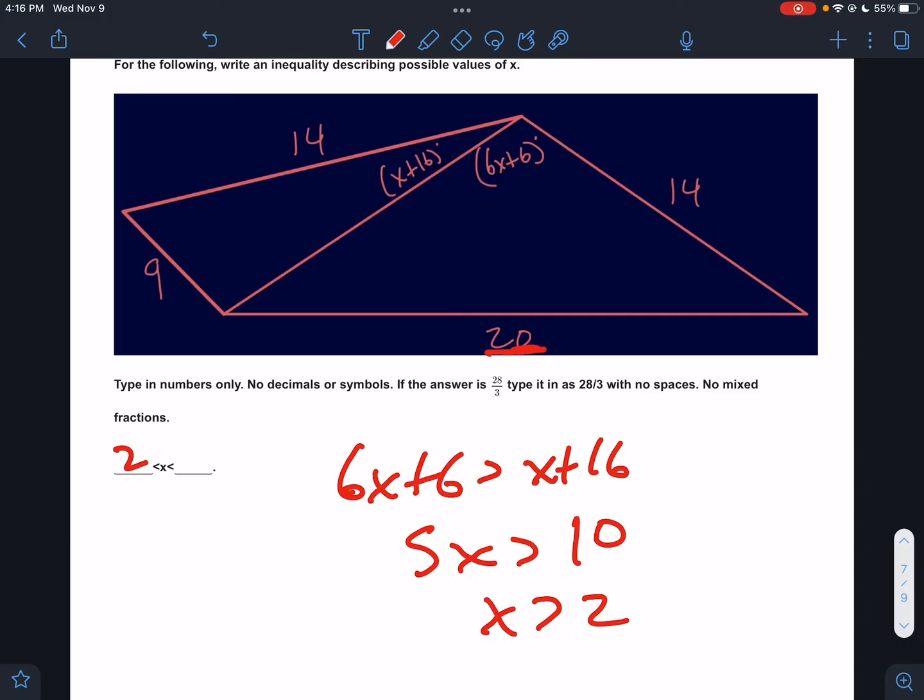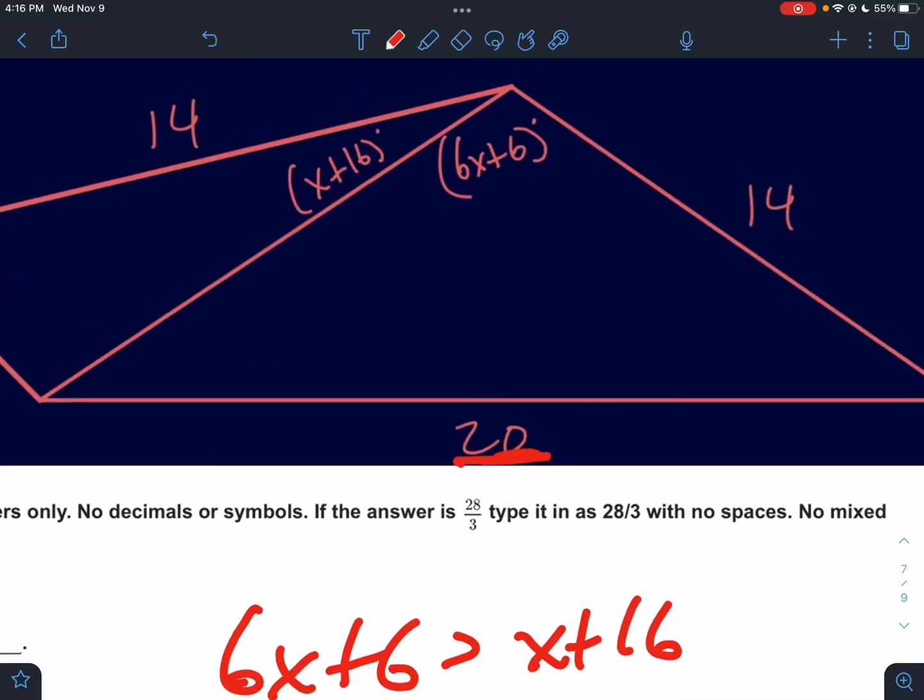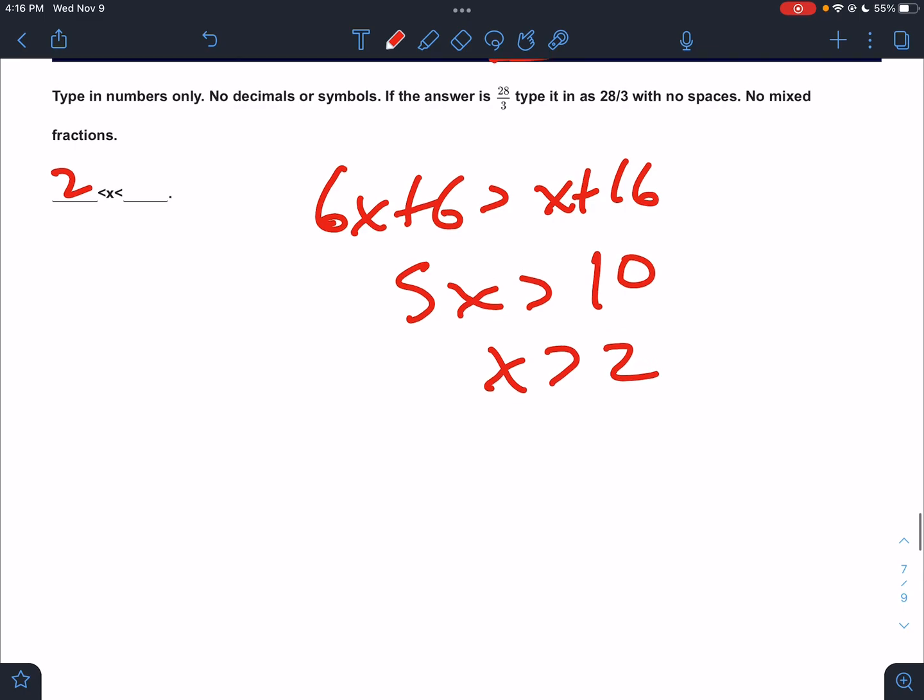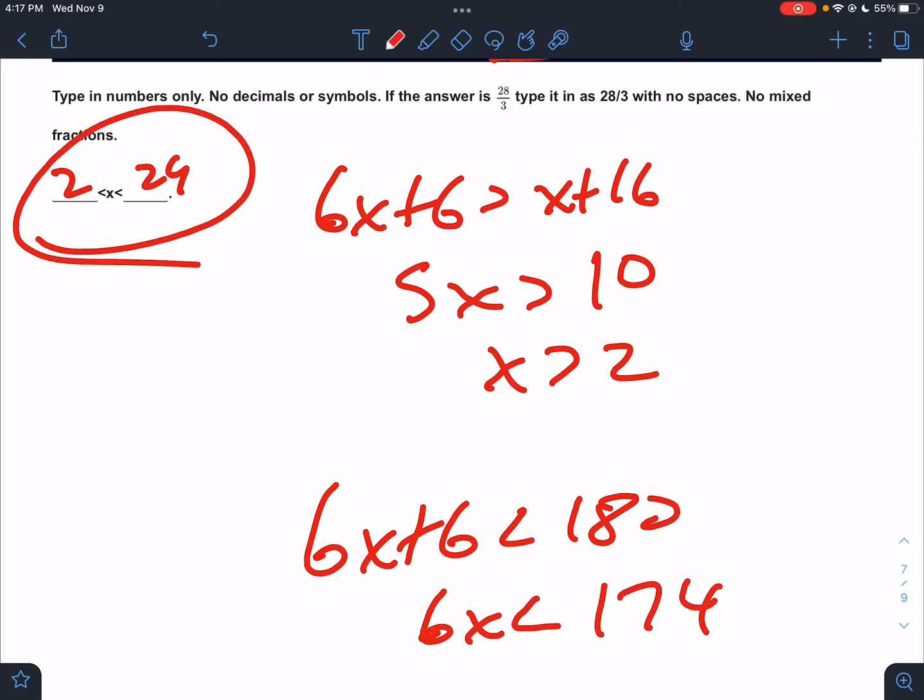I don't even know I messed up because I did this problem earlier. So x must be bigger than 2, but guys what's the upper boundary? These are angles. Angles cannot be 180. The bigger angle would hit 180 first, so we have to confirm that 6x + 6 is less than 180. So 6x is less than 174, so x must be less than 29.